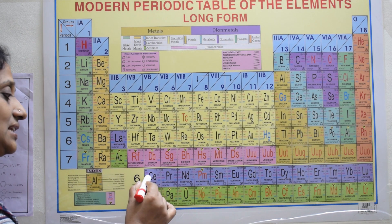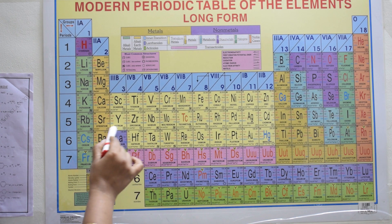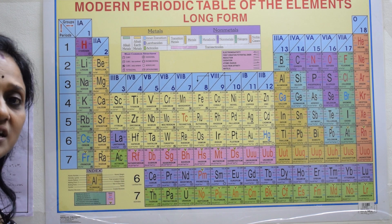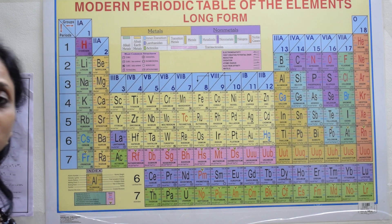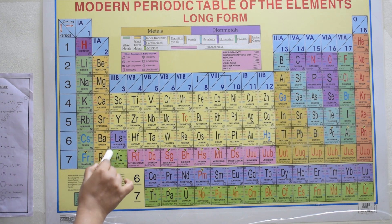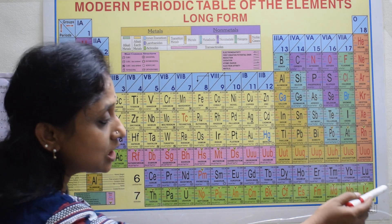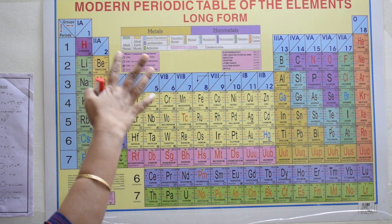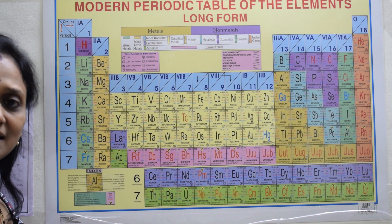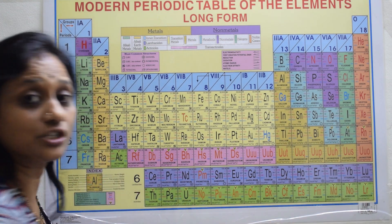The f-block elements contain two series: the lanthanide series and the actinide series. The lanthanide series starts from lanthanum (element 57) and includes cerium, praseodymium, neodymium, promethium, samarium, and so on, ending at lutetium. The actinide series starts from actinium and ends at lawrencium.